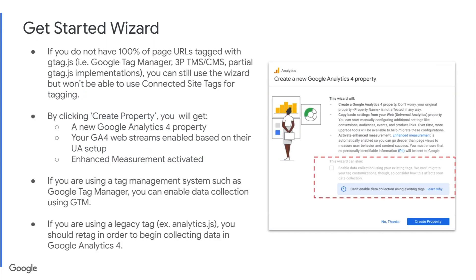Once you click that button, you'll see a pop-up screen with information about the wizard. Quick note that if you do not have 100% of your page URLs tagged with gtag.js — for example, if you're using Google Tag Manager or a third-party TMS, or even partial gtag.js implementations — you can still use this wizard, but you won't be able to use connected site tags for tagging.